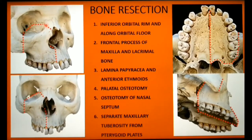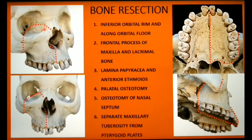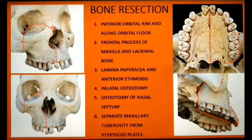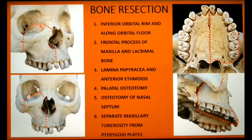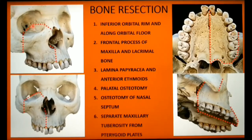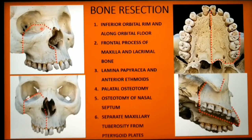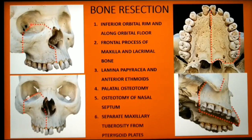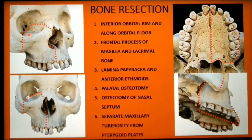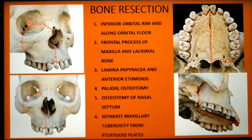The second osteotomy is at the frontal process of the maxilla and the lacrimal bone. An oscillating saw is used here rather than an osteotome because the bone in this region is hard. The osteotomy is directed while keeping it a few millimeters below the level of the fronto-ethmoidal suture line. The third osteotomy connects the first two by gently tapping an osteotome to enter the ethmoid air cells at the medial wall of the orbit, retracting orbital contents laterally. The osteotomy is directed posteriorly until the posterior ethmoidal foramen, kept a few millimeters below the fronto-ethmoidal suture line.